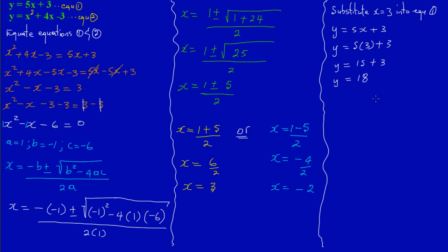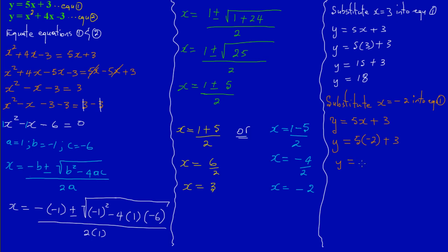So when x is 3, I have found my corresponding y value to be 18. Now I need to find the corresponding y value when x equals negative 2. So substituting x equals negative 2 into equation 1: y equals 5x plus 3. So y is equal to 5 times negative 2, which gives negative 10 — a positive times a negative gives a negative — plus 3. Therefore y is equal to negative 7.